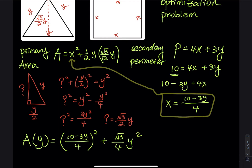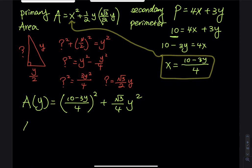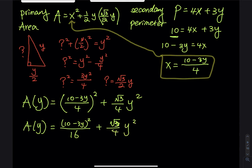Let's clean up the expression before differentiating. A(y) = (10 − 3y)²/16 + (√3/4) · y². The first term is (1/16)(10 − 3y)², so using the chain rule, its derivative is (1/16) · 2(10 − 3y) · (−3).